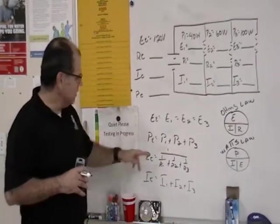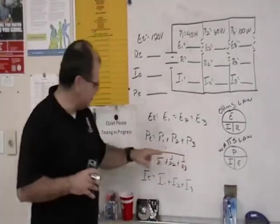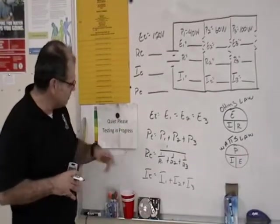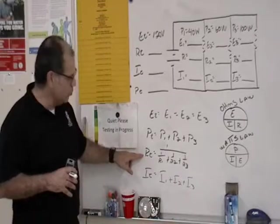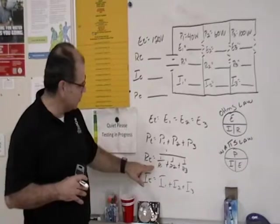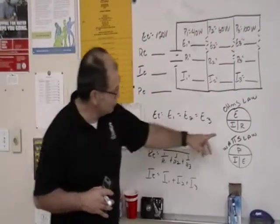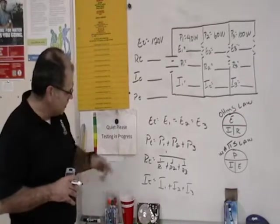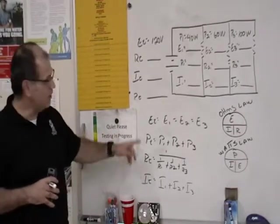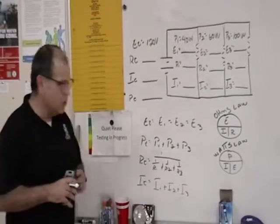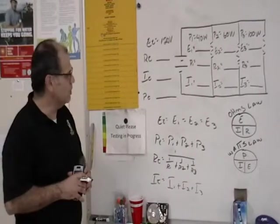Total power is the sum of the individual powers, very similar to the sum of the powers in series. However, the total resistance in a parallel circuit can be solved using what we call the reciprocating method, and we can also use Ohm's law to solve for resistance values. Total current in a parallel circuit is the sum of the individual currents through each of the branches.